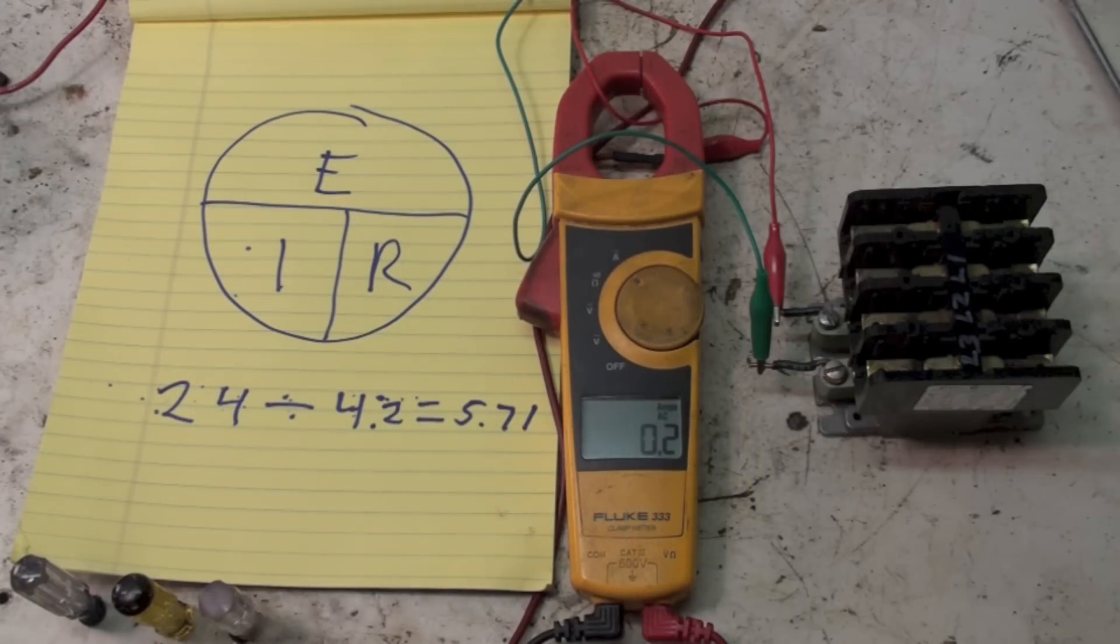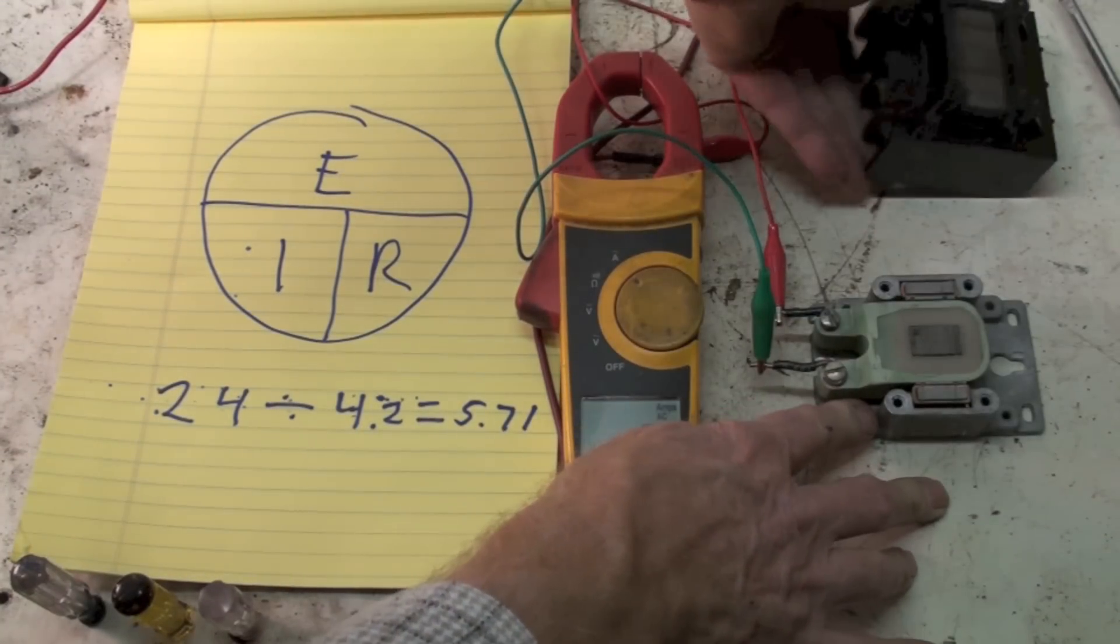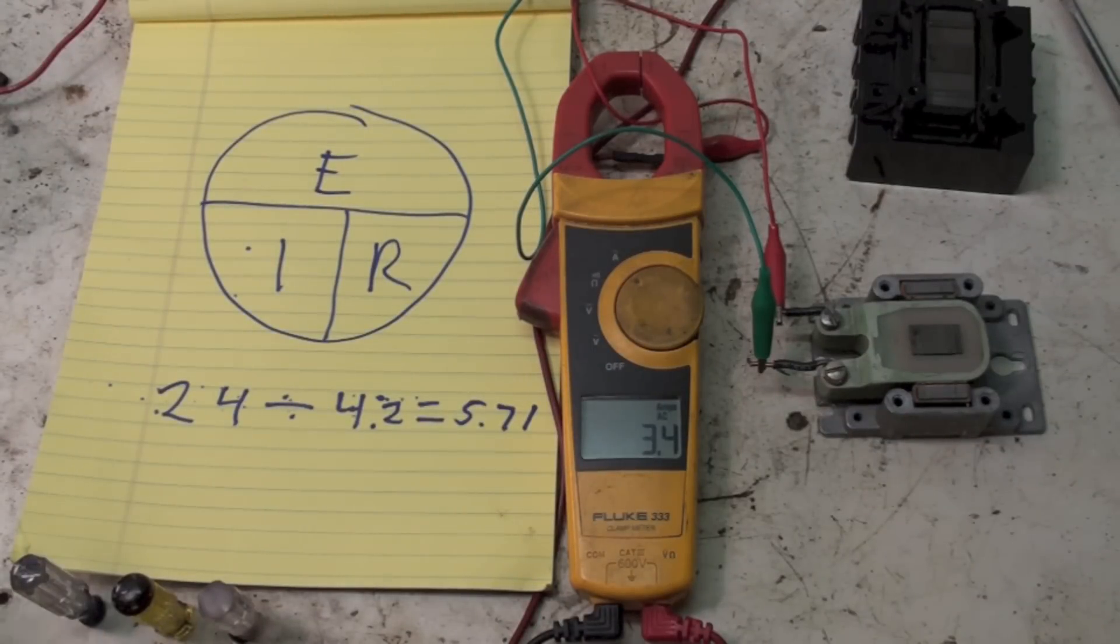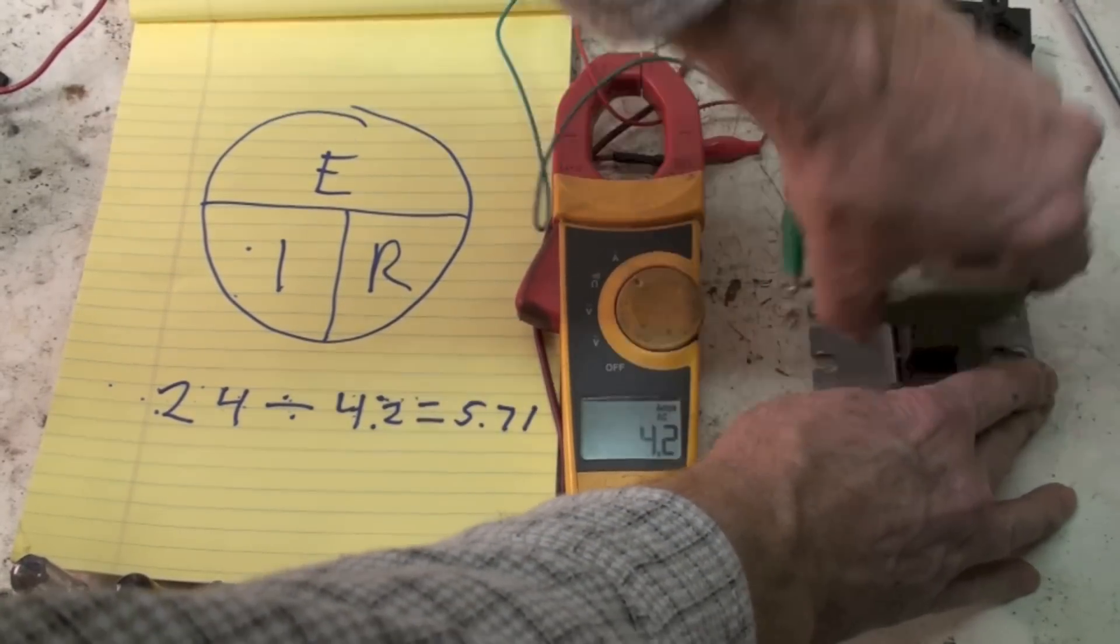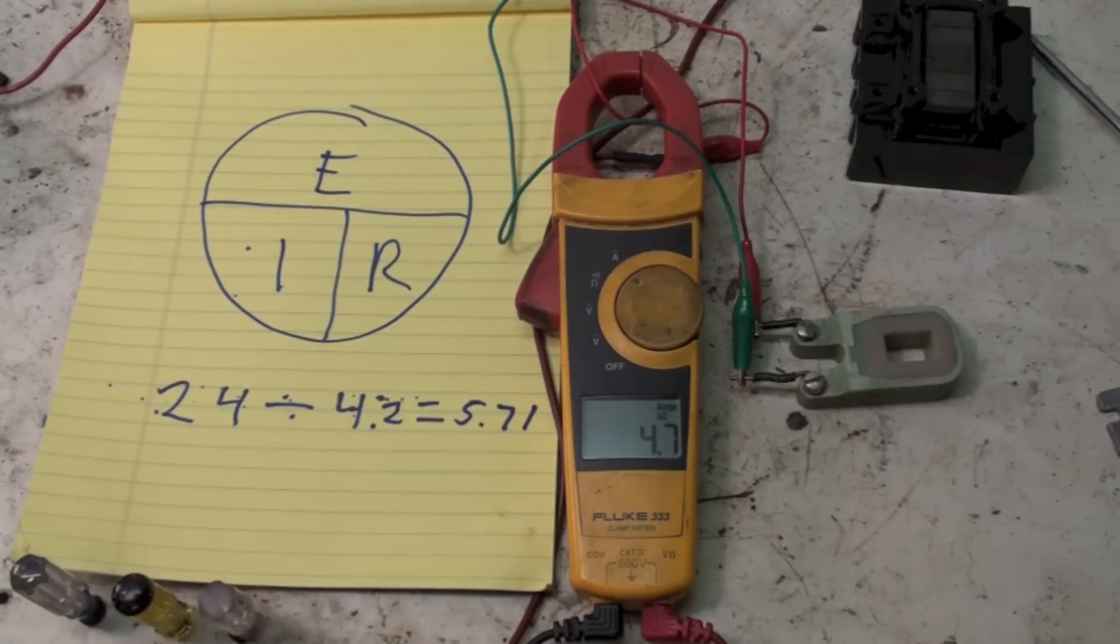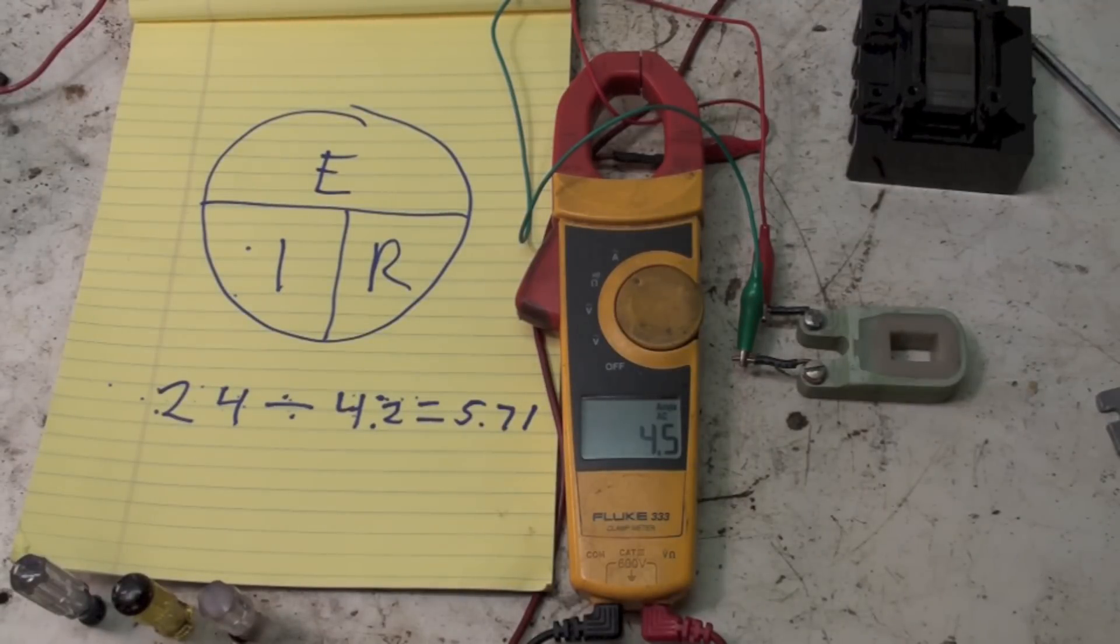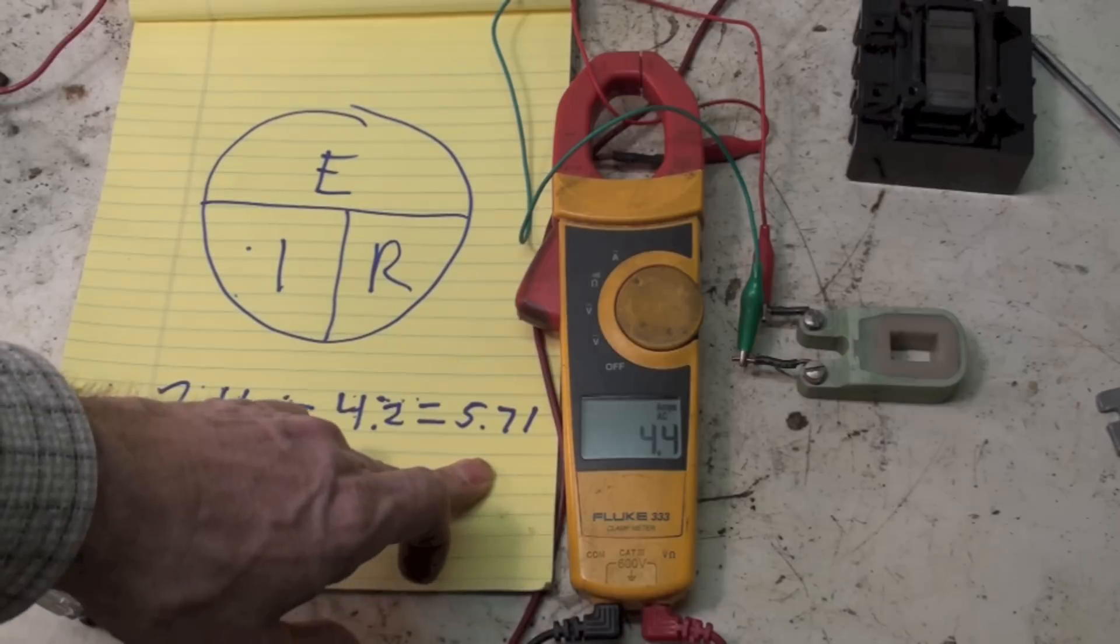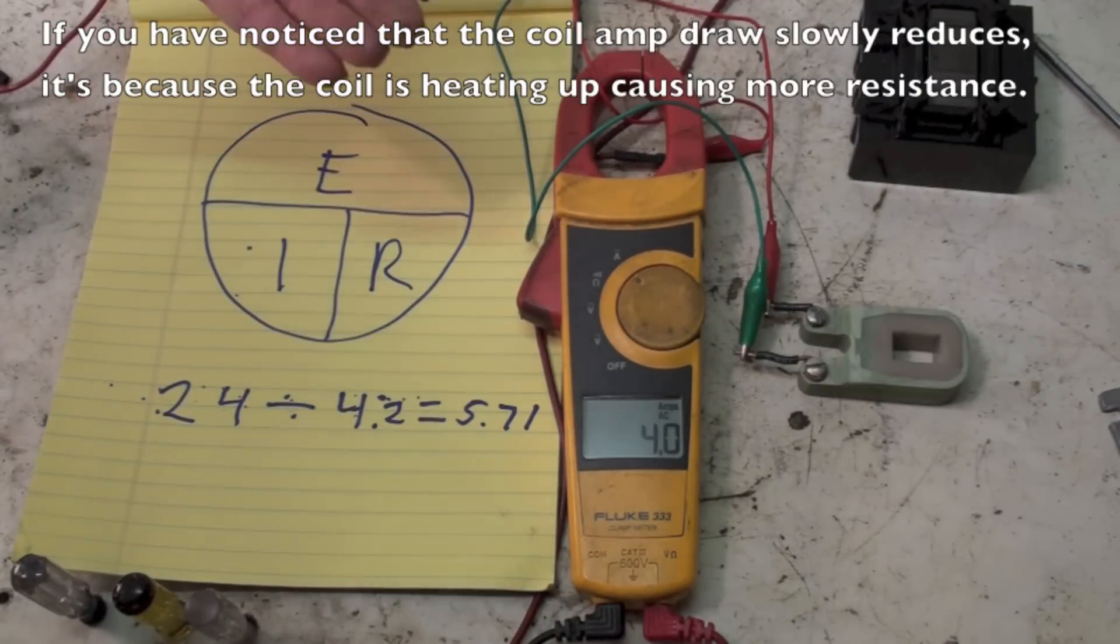Two tenths with everything like it should be. 3.4 with part of the core missing. 4.7 with just the core itself. That's pretty close to 5.71. There's still some back EMF in this thing, but because it's not being concentrated by the core, the amp draw goes way up.